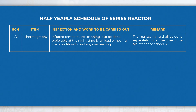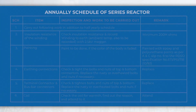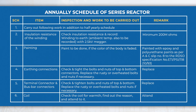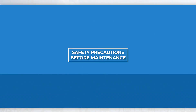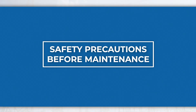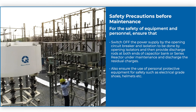In the half-yearly schedule of the series reactor, perform activities like thermography, etc., in addition to monthly schedule activities. In the annual schedule of the series reactor, perform activities like insulation resistance testing of winding, tightness of earthing connections and terminal connections, etc., in addition to half-yearly and monthly schedule activities.